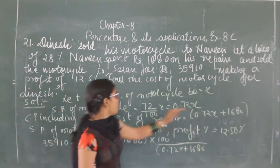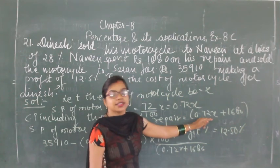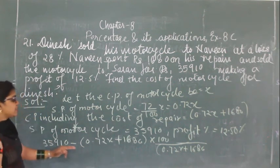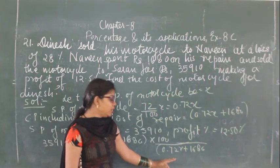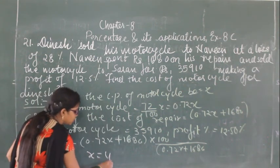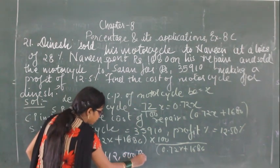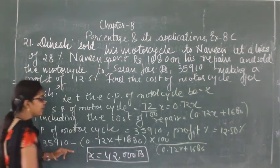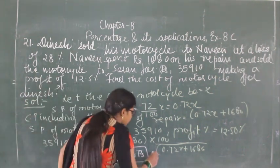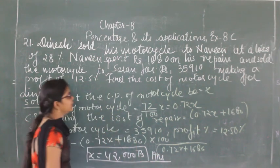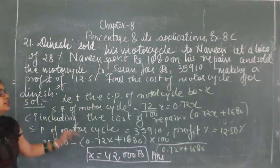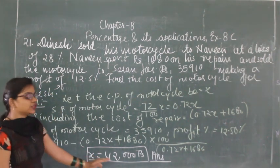The motorcycle is then sold at 12.5% profit. Setting up the equation with the final selling price and solving for X, we get X equals ₹42,000. Therefore, the original cost price of the motorcycle is ₹42,000.